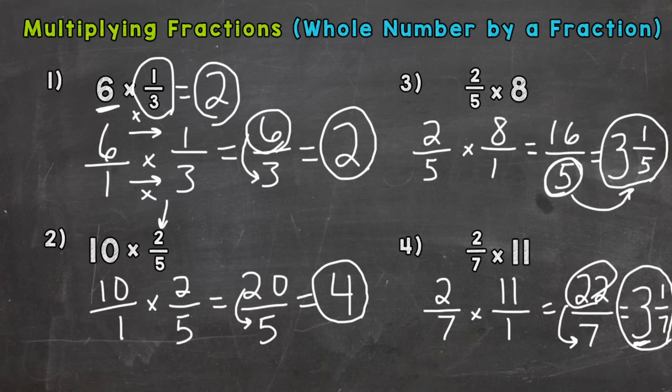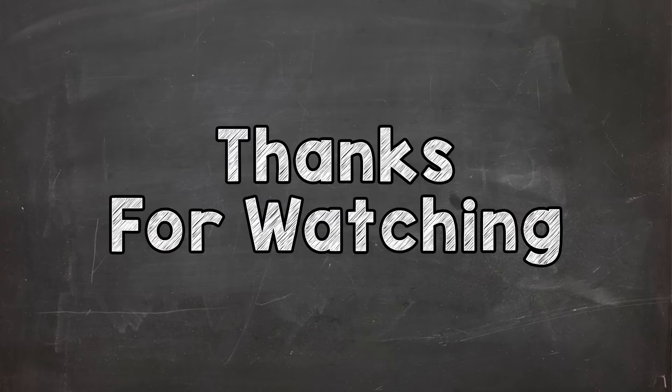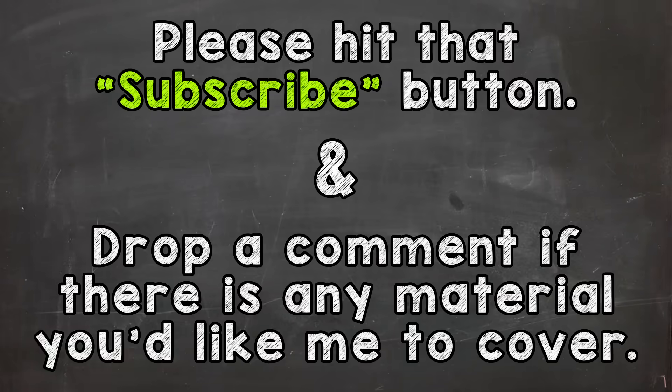So there you have it, multiplying fractions, a whole number by a fraction. Just remember you put your whole number over one and then you have a numerator and a denominator and you can multiply straight across. Thanks so much for watching and until next time.